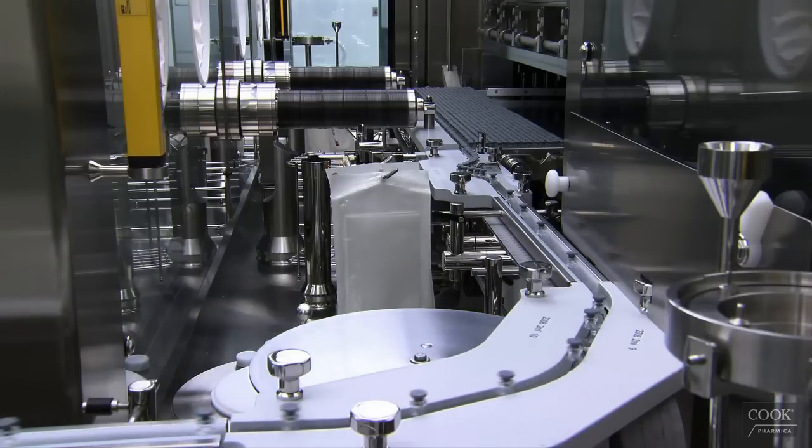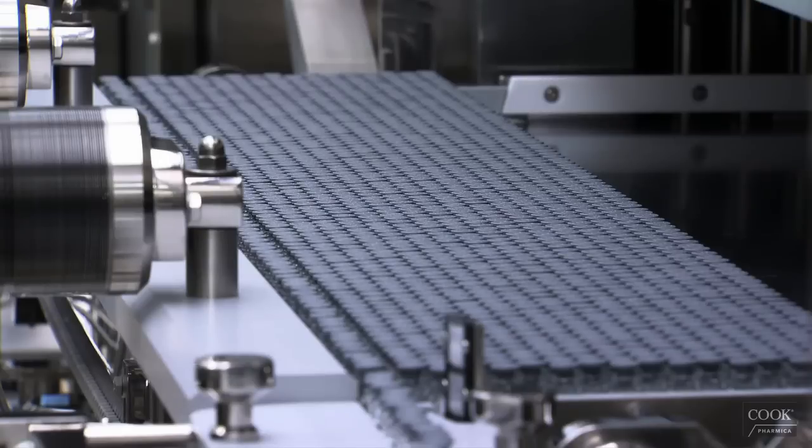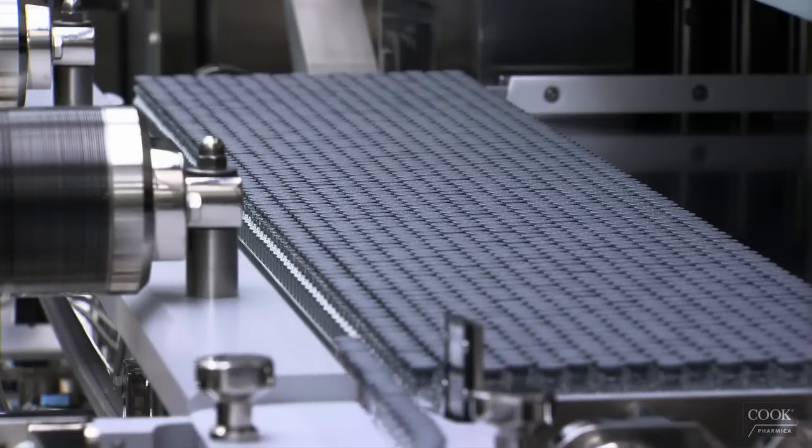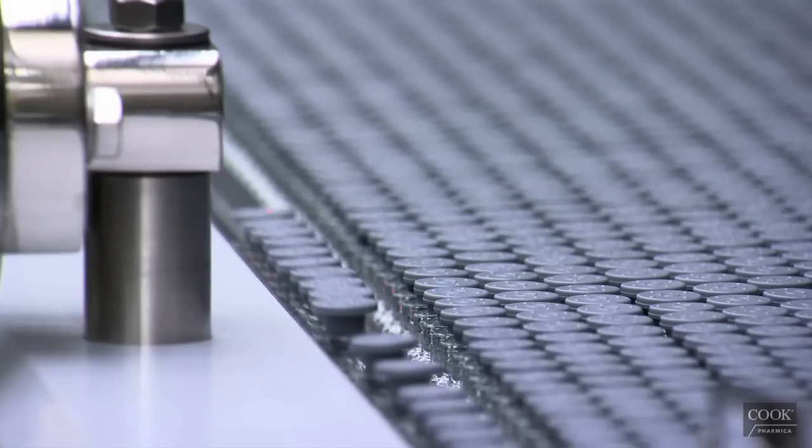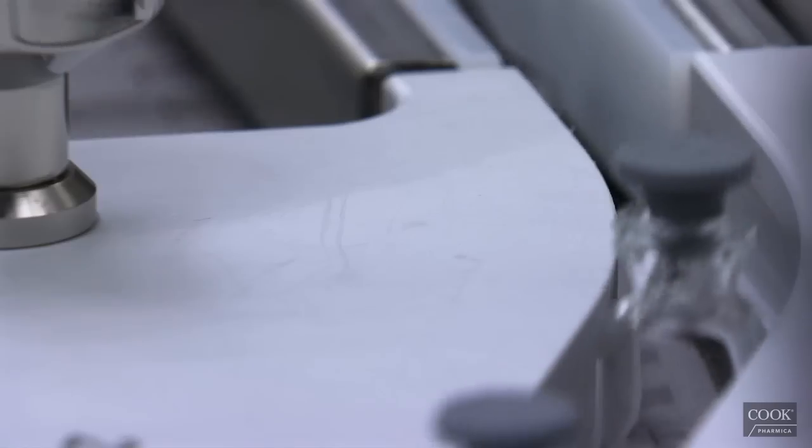For freeze-dried products, the vials enter the 250 square foot lyophilizer using an automated loading and unloading system that feeds vials row by row. The lyophilizer can hold 120,000 2-milliliter vials or approximately 30,020 milliliter vials.